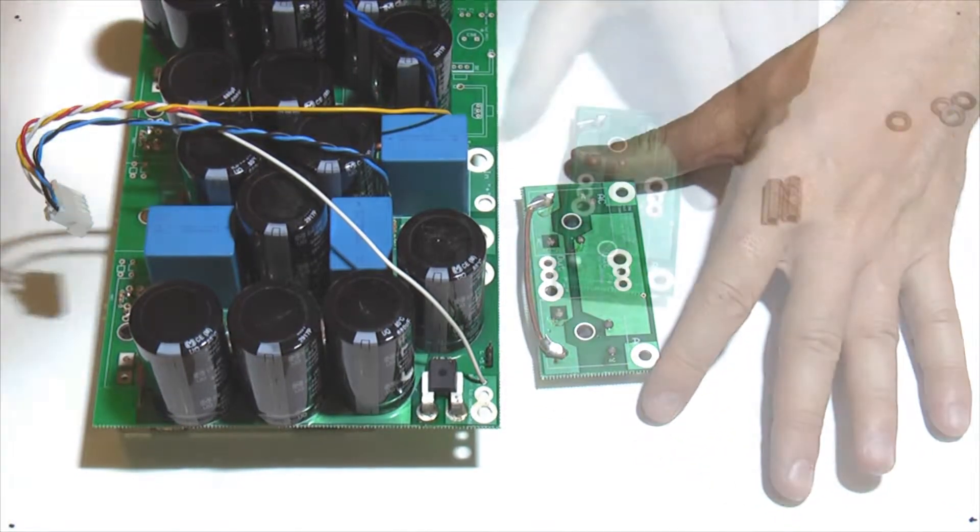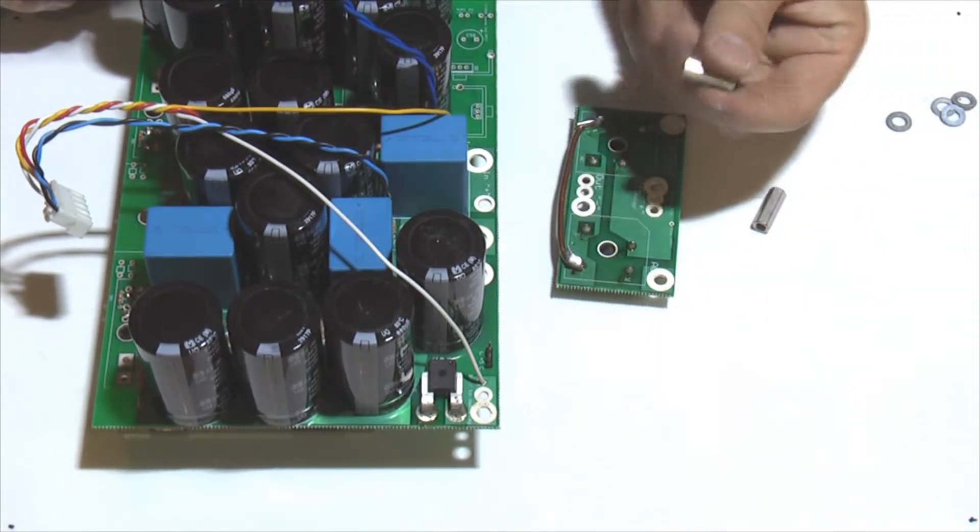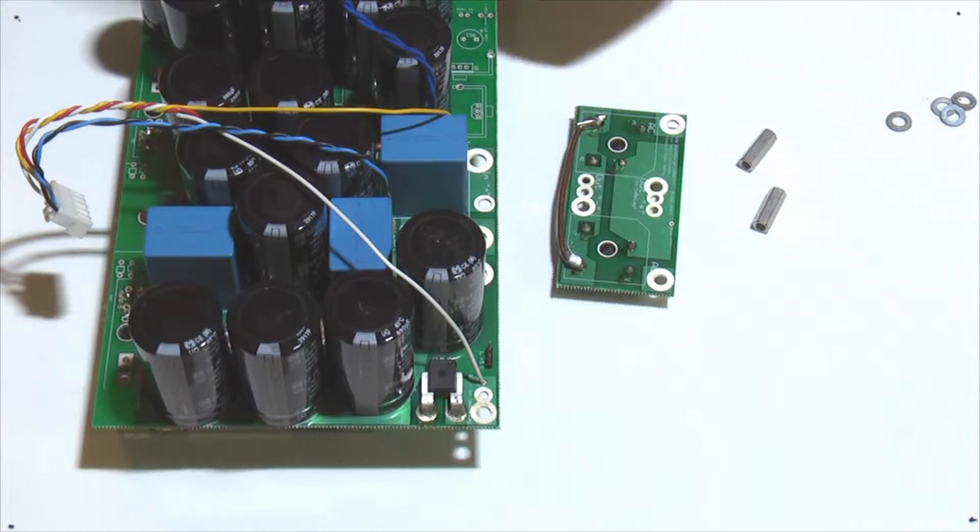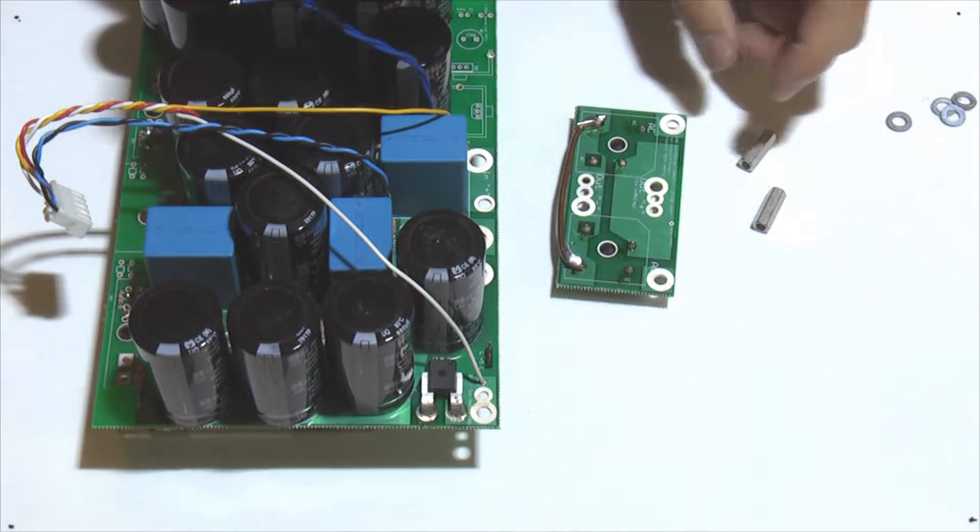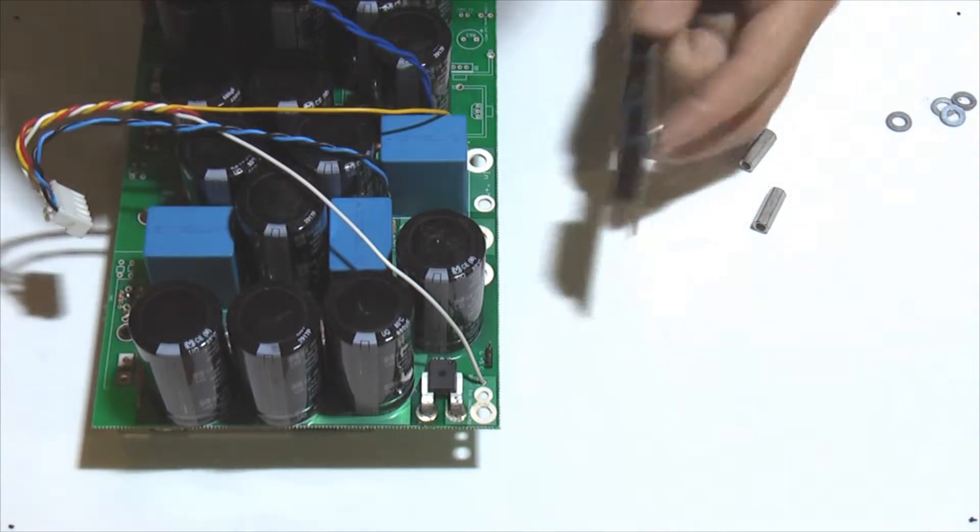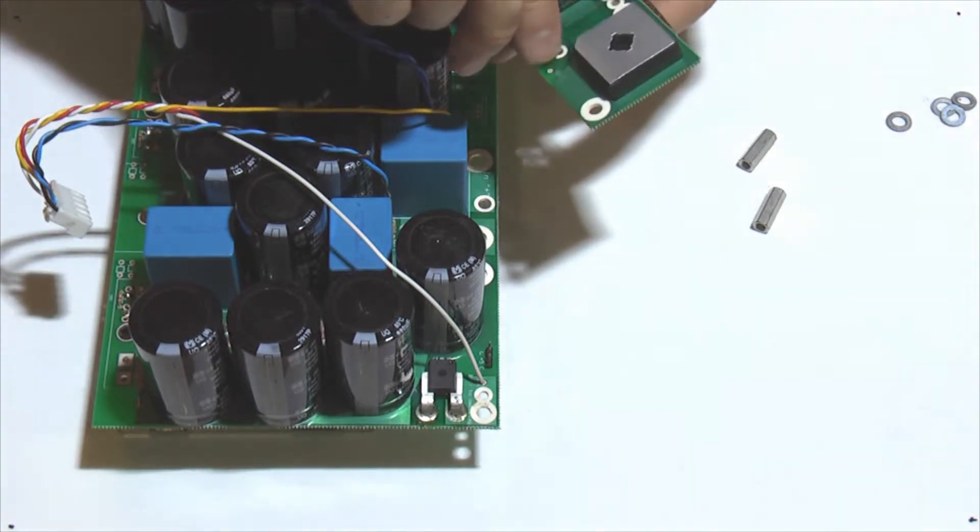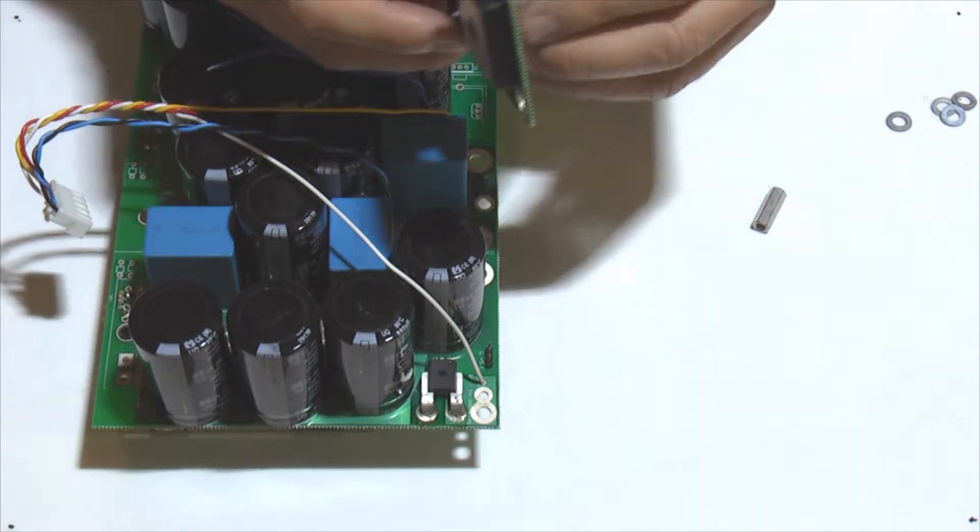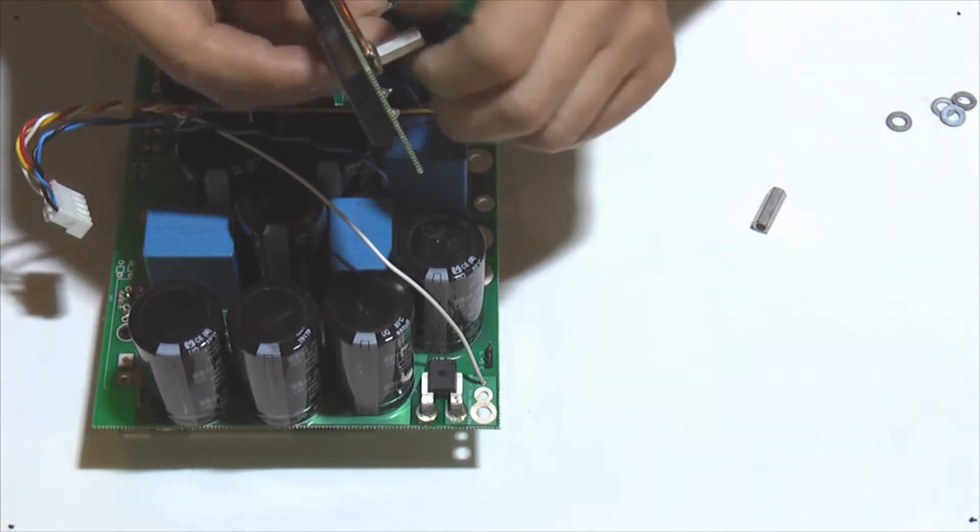So let's get some standoffs. So we're going to use these aluminum standoffs. These are female to female. So you need to put a bolt on each side. And we're going to use this brass bolt here, 1032, and a very thin washer. So this goes through the large hole here. And the standoff screws on that, like this.